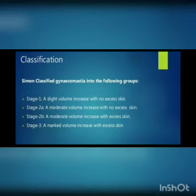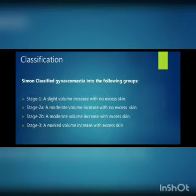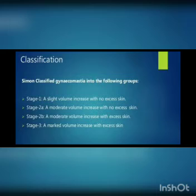Stage 2b is a moderate volume increase with excess skin — both volume and skin are increased. Stage 3 is a marked volume increase with excessive skin, meaning there is a significant increase in both breast volume and overlying skin.